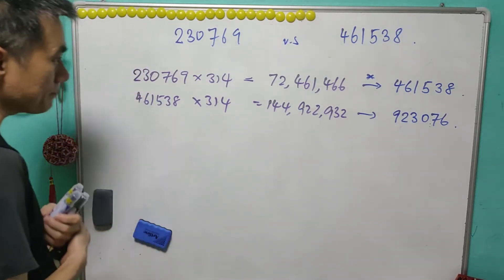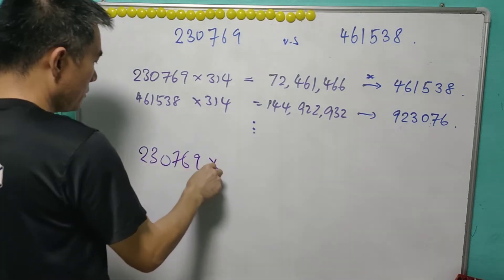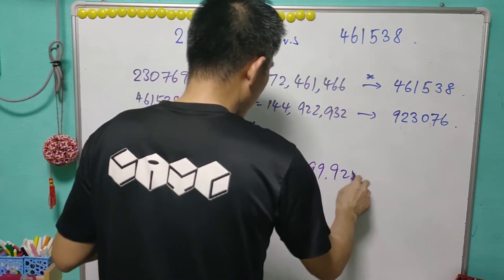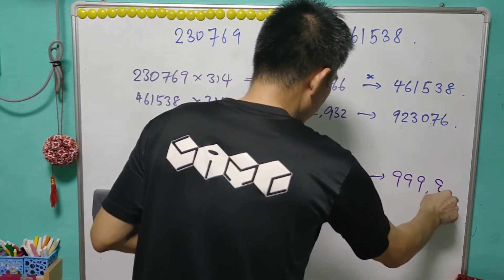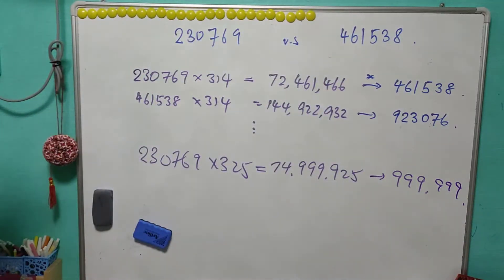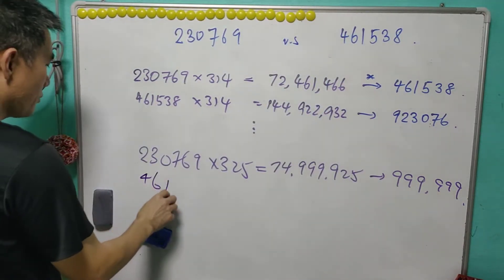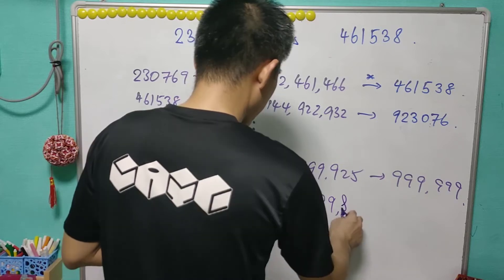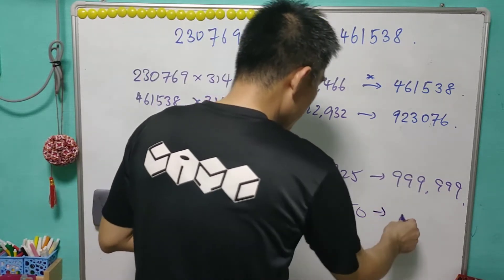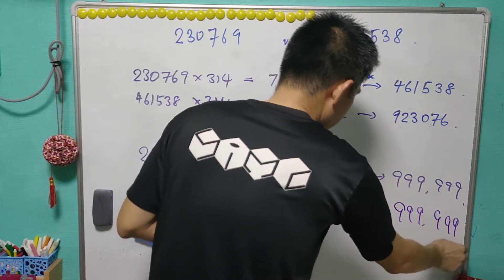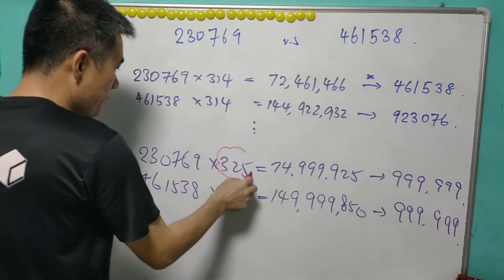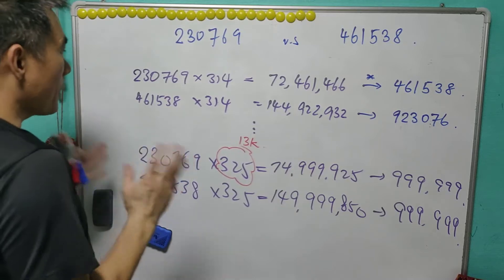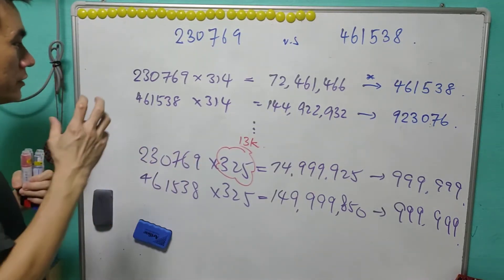What is the exception for this set? It is not 315 — in this case it is 325. For 230769 times 325, you get 74999925, and after the operation you get 999999. Similarly for 461538 times 325 you get 149999850, and after the operation you again get 999999. This exception occurs when the multiplier is a multiple of 13.